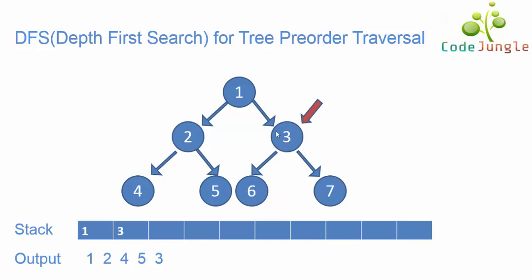Now system will check the next child element for 3 as 3 is the topmost element in the stack. The next child element for 3 is 6. Hence 6 has been included in the stack as well as in the output. Now system will see if there is any child element for 6 or not, because 6 is the topmost element in the stack. As there are no child elements for 6, hence 6 has been popped out of the stack and nothing has been included in the output.